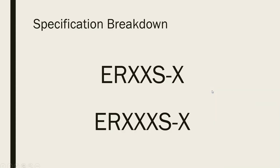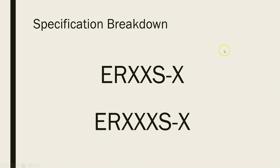Typically you're going to find classifications in one or two formats. You're going to find one where there's an E, an R, followed by two digits, an S, and then a dash and another digit. Or you'll find E, R, followed by three digits, followed by S, dash, and another digit. So you're going to find it either with two numbers or three numbers, and you'll see what the difference is and what the similarities are in a moment.